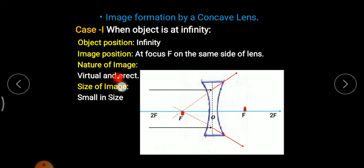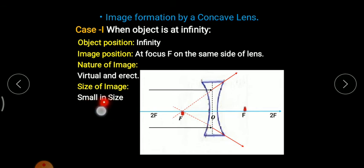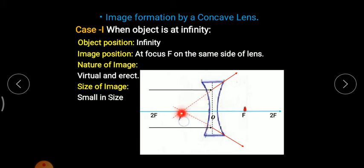So the image is obtained exactly at focus. This image is virtual and erect — it is obtained on the same side of the lens as the incident ray, and therefore it cannot be traced on a screen. It is a point-size image. The object may be at infinite distance, but its image is obtained exactly at focus and it is a point-size, virtual, erect, and smaller image.